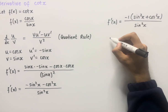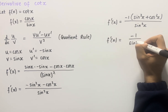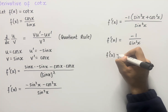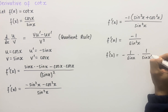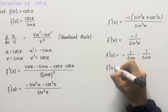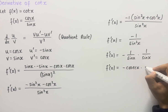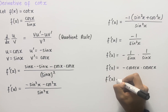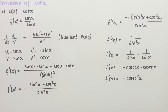So f dash of x equals minus one over sin squared x. We can think of this as minus one over sin x times one over sin x, and one over sin x equals cosec x. So we end up with f dash of x equals minus cosec x times cosec x, giving us a final answer of f dash of x equals minus cosec squared x, which is the derivative of cot x.